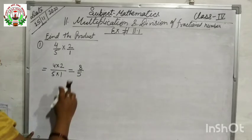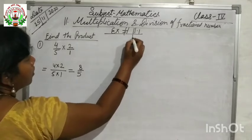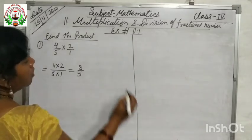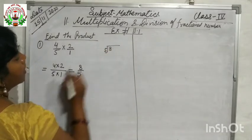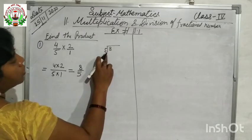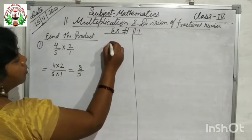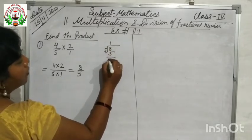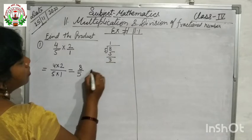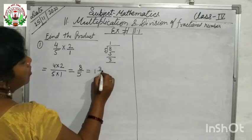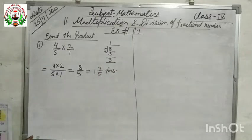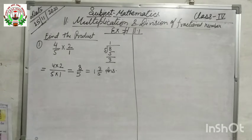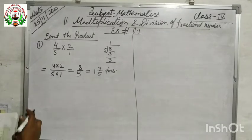That gives us 8 over 5. It is an improper fraction, so we have to convert it into a mixed fraction. We divide: 5 goes into 8 once, remainder is 3. So the answer is 1 and 3/5. After multiplying, we will convert into mixed fraction.